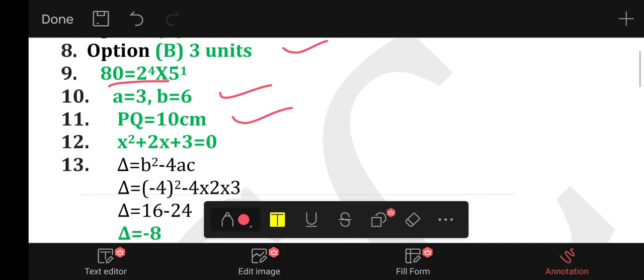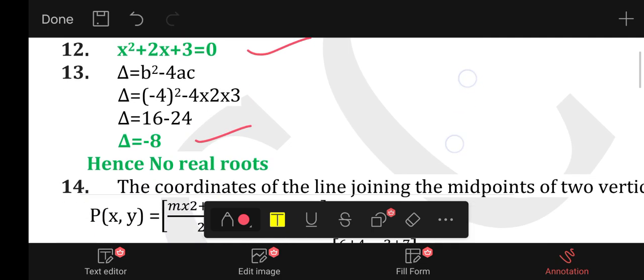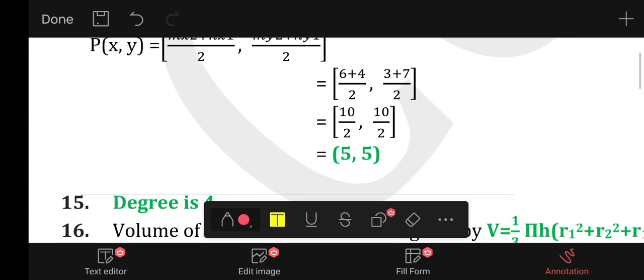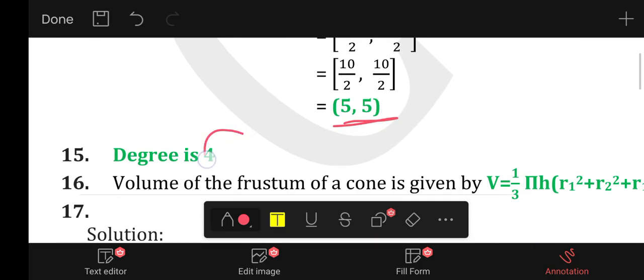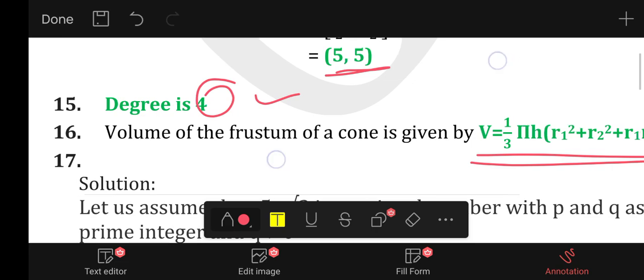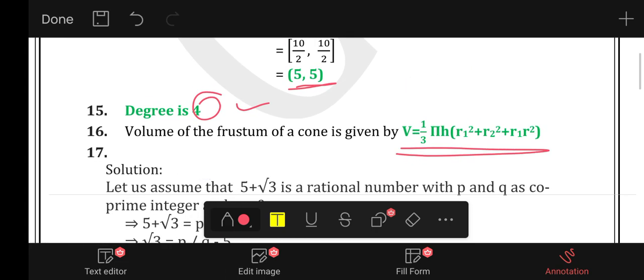11th PQ is equal to 10.7, 12th x square plus 2x plus 3 equals 0, 13 delta is equal to minus 8 no real roots. Coordinates of midpoint using midpoint formula is 5,5. Parliament degree 4. Volume of frustum formula. 16 marks, 10 marks - write in comment box.